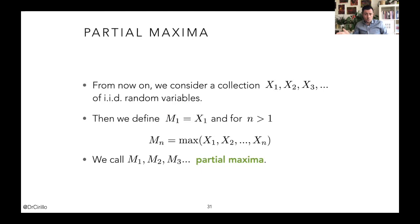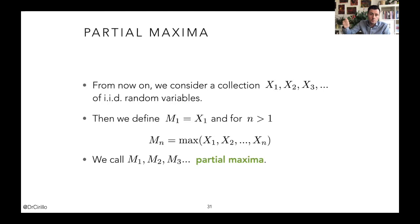So m₃ is the maximum among the first three observations, m₁₀ among the first ten. Necessarily, until a new record is observed — a new maximum larger than all previous ones — m₁, m₂, m₃ can share the same value. For example, in the sequence 1, 1, 2, 1, 1, 1, 1, the maximum remains 2 until a value larger than 2 appears, such as a 3, 4, or 5. We call m₁, m₂, m₃ and so on the partial maxima.